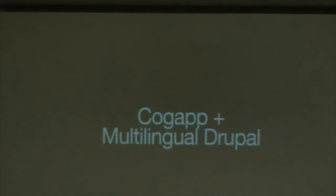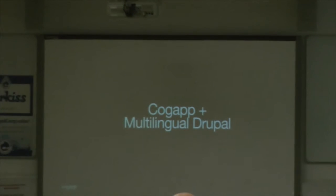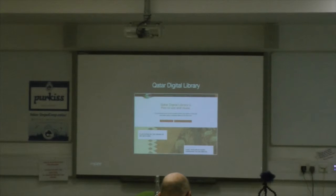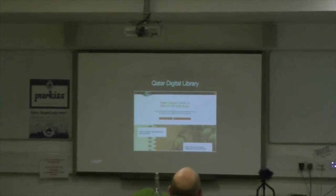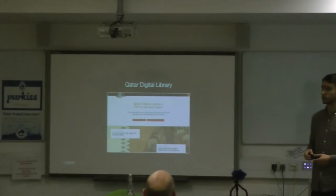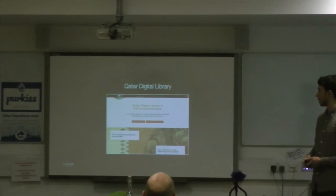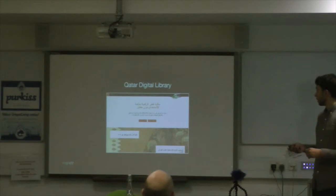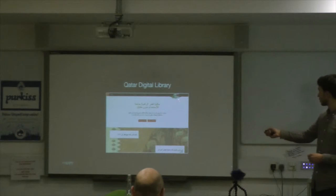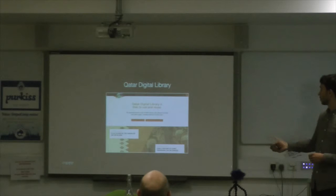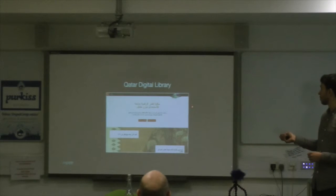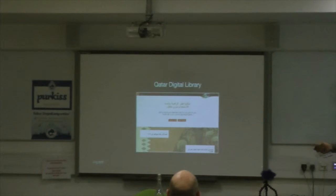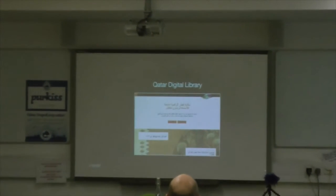CogApp has worked on a number of multilingual Drupal sites in the last few years. The most recent that launched was the Qatar Digital Library, a project we worked on in partnership with the British Library. They're in the process of digitising half a million records and worked with us to get those online. It's available in English and also in Arabic. The whole site flips from left-to-right to right-to-left, and that is how Arabic readers will expect to see a website.